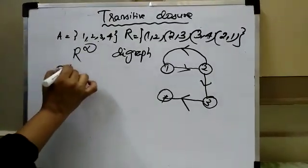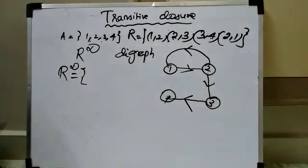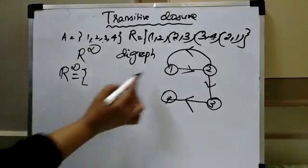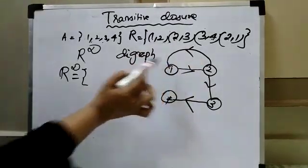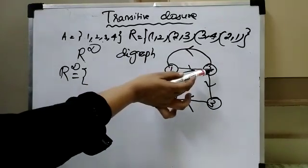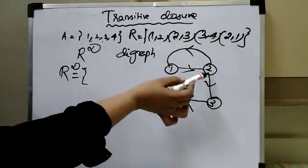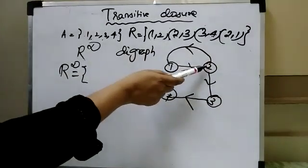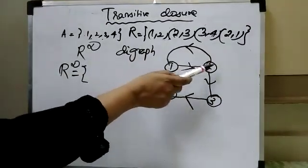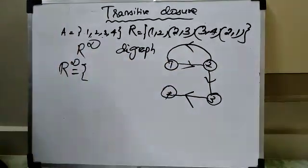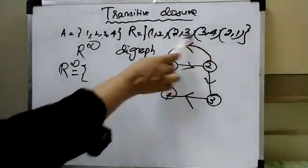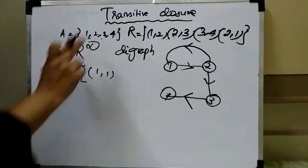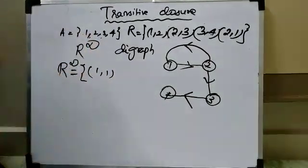Now we will construct the transitive closure. Take the first vertex in set A, which is 1. From 1, can I reach 1 again? Start from 1, travel through some other vertex, and reach 1 again. I start at 1, travel to 2, and from 2 I can reach 1 again. So from 1 I can reach 1 — the pair (1, 1) is the first pair placed in the transitive closure.